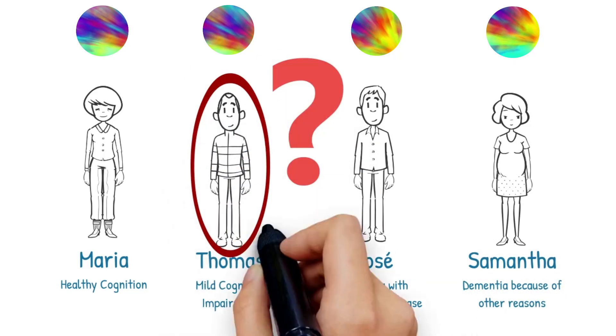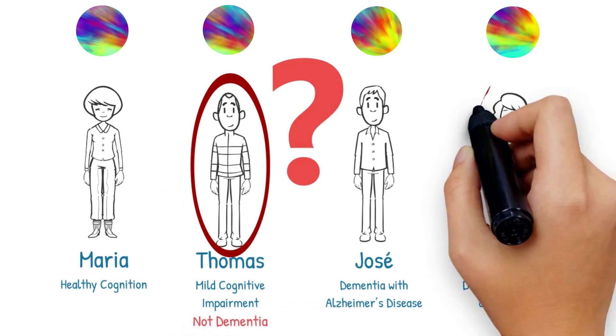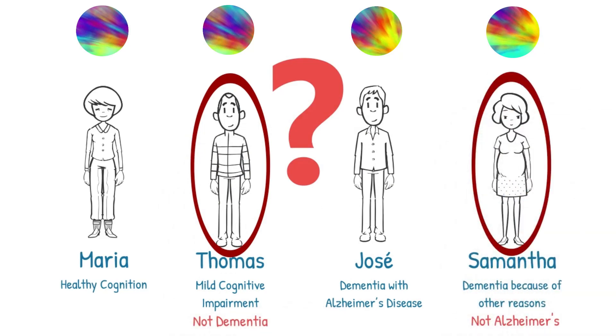How can we tell if Thomas has cognitive impairment but not dementia, or whether Samantha has dementia but not Alzheimer's?